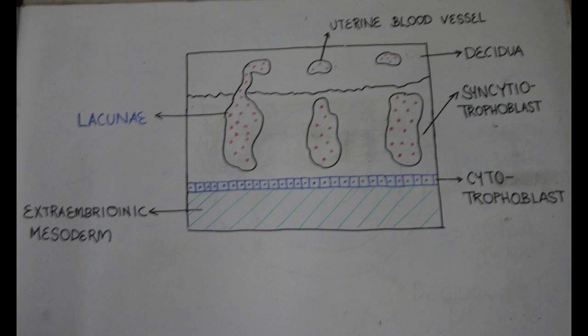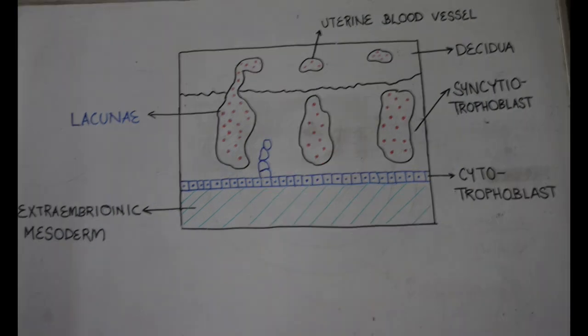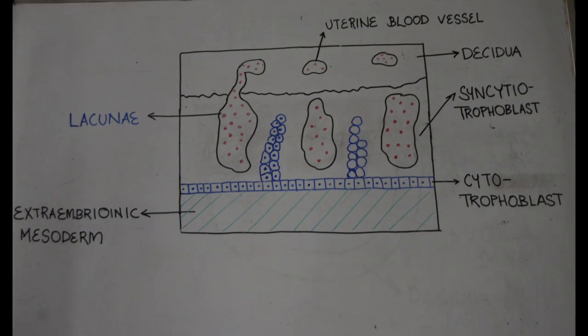Each trabecula is initially made up entirely of syncytiotrophoblast. Now the cells of the cytotrophoblast begin to multiply and grow into each trabecula.